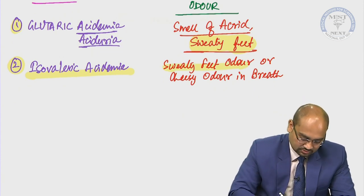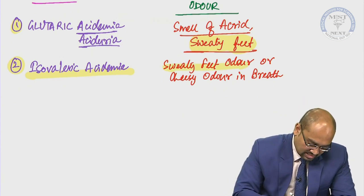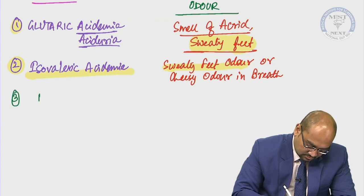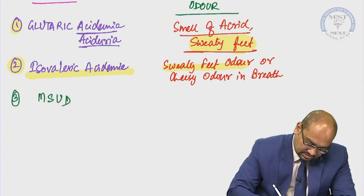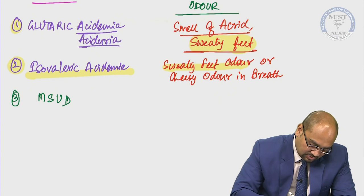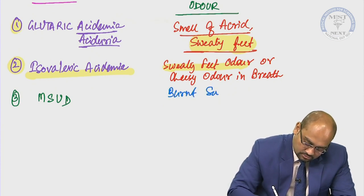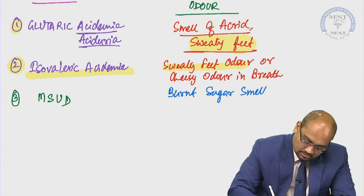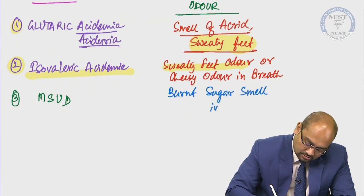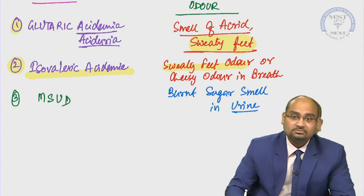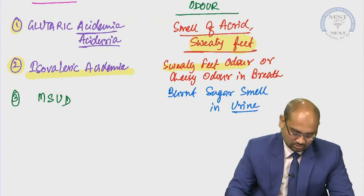Then we have maple syrup urine disease, MSUD. This one classically has burnt sugar smell in urine — an important point to be remembered.